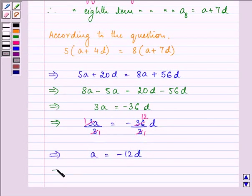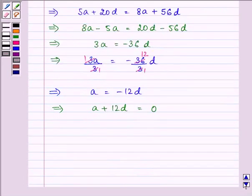which further implies A plus 12D is equal to 0. Now, we know that the 13th term of an AP is written as A plus 12D.